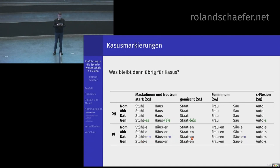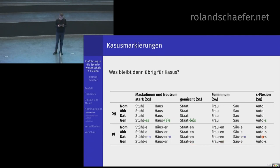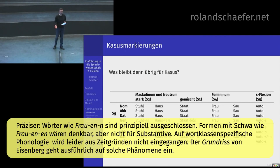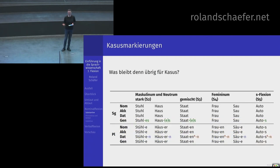Im Dativ-Plural hängt an der Plural-Endung in einigen Fällen noch ein N hinten dran: den Stühlen, den Häusern, den Säuen. Ein Dativ-Kennzeichen, das aber nur im Plural benutzt wird. Warum nicht bei Staaten, Frauen und Autos? Wenn man das N anhängen würde, kämen Formen wie Staatenen, Frauenen und Autosen – solche Wörter haben wir einfach nicht. An jedem Dativ-Plural wird noch ein N drangehängt, außer es geht phonotaktisch halt nicht.